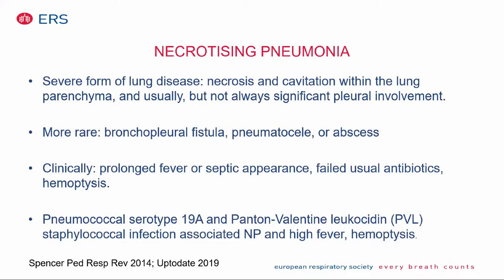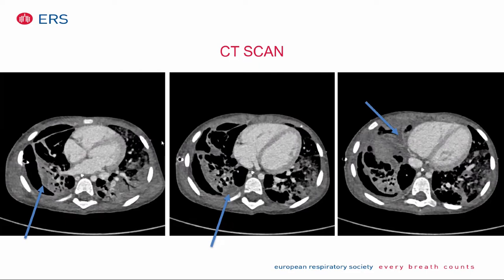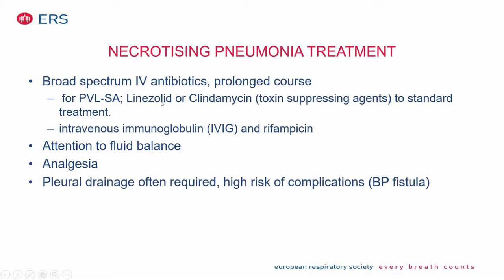A few slides on necrotizing pneumonia, which is a very severe form of lung disease with necrosis and cavitation. You often see bronchopleural fistula, or an abscess, and children have the same clinical symptoms as pneumonia but are much more ill. Necrotizing pneumonia is associated with certain serotypes of pneumococcal and certain staphylococcal infections. This is a typical CT scan showing cavities, necrotic tissue, small abscesses, and an air collection. Long-term, broad-spectrum IV antibiotics are needed, also targeting PVL-producing Staph. Pleural drainage is often required but has a higher risk of complications like bronchopleural fistula.